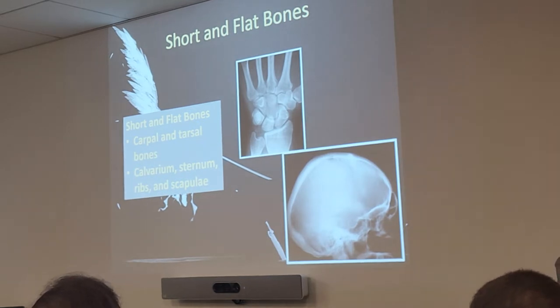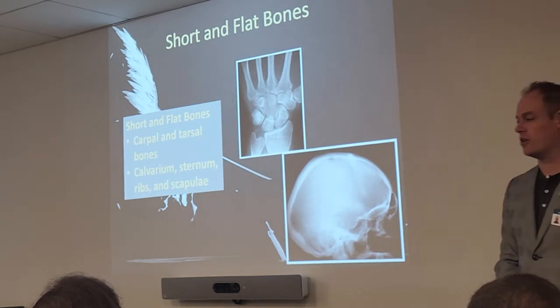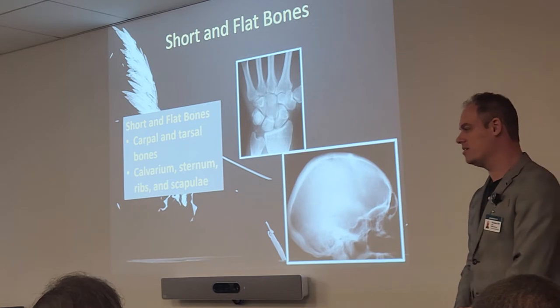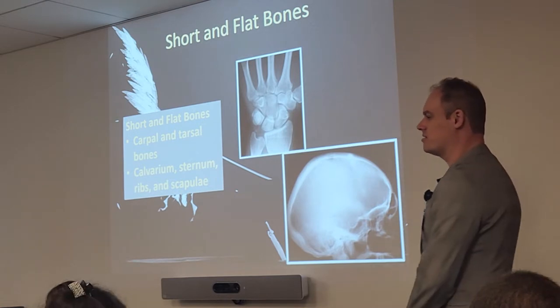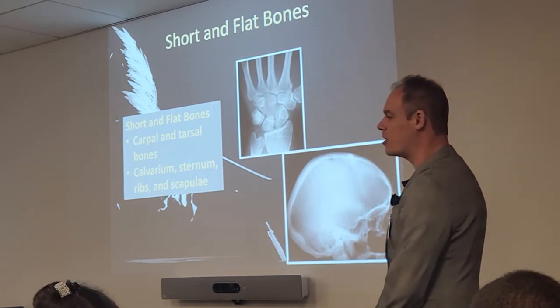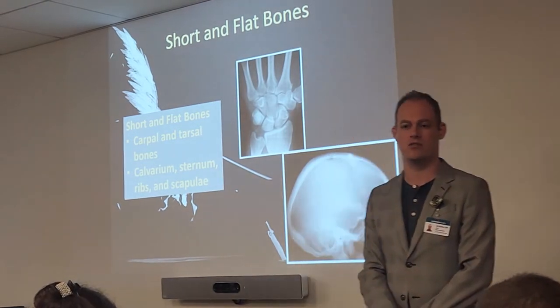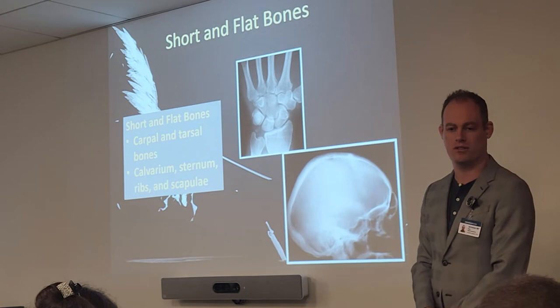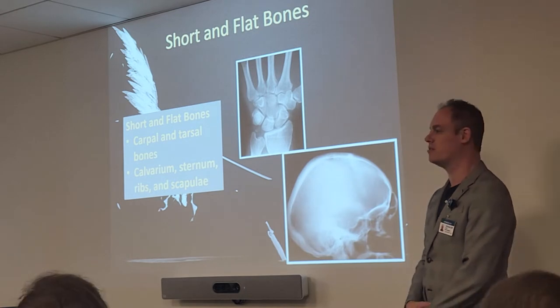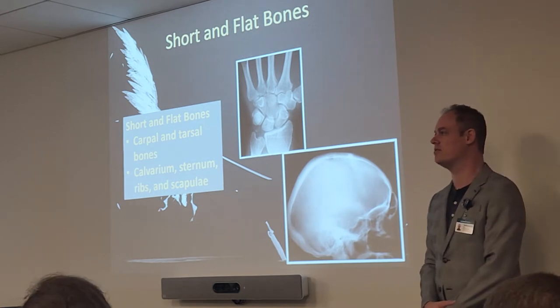Carpal and tarsal bones are the short bone variety. You can see some of those carpal bones on the little skeletons in front of you — those little wrist bones are all considered short bones.